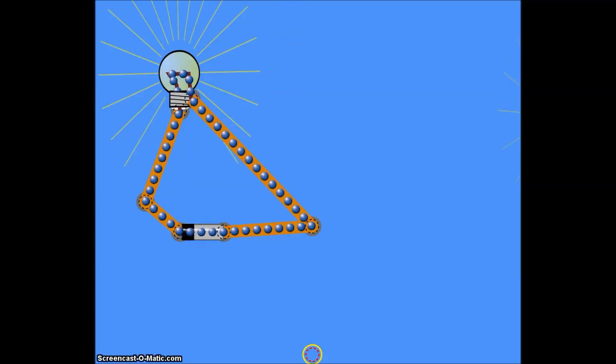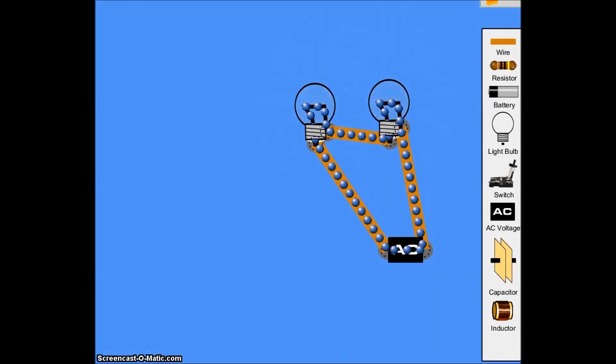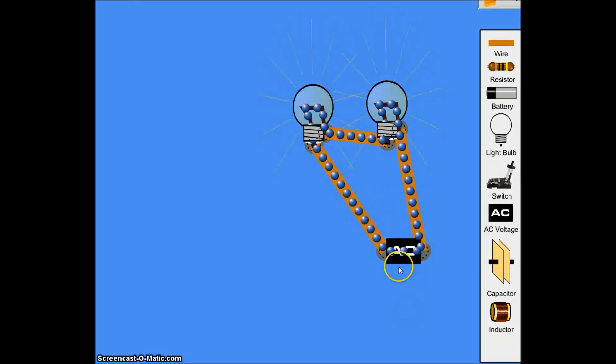Alternating current, on the other hand, switches back and forth, and we can see that over here. You can see the electrons don't really move very far. But they're alternating back and forth, back and forth. Remember this is a scaled version. These electrons would actually be going so much faster.